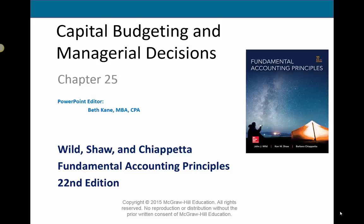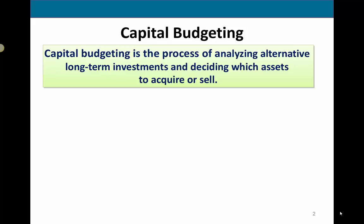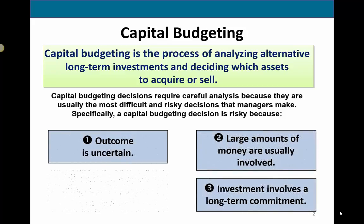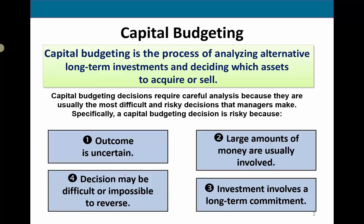We're going to do chapter 25 lecture on capital budgeting and touch on some managerial decision points. The key thing to understand about capital budgeting is it's long-term. We're making a long-term commitment, so the outcome is uncertain — kind of like the weather. The longer out it gets, there are so many different data points and issues that may arise that you really just don't know how it's going to turn out.